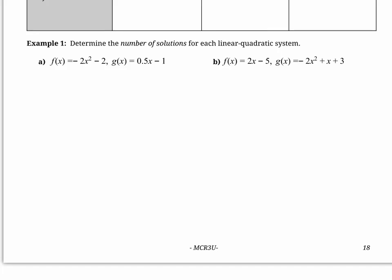In this lesson, we're going to review how to find the number of solutions of an equation, and we're also going to solve linear quadratic systems. A system of equations just means multiple equations, so if we were looking at a graph of a system of equations, there'd just be multiple relations on that graph. A linear quadratic system means that the equations we're looking at are of a parabola and a line — just a line and a parabola on the same graph.